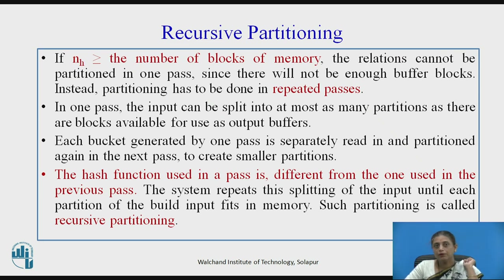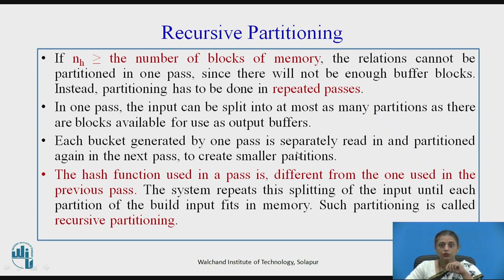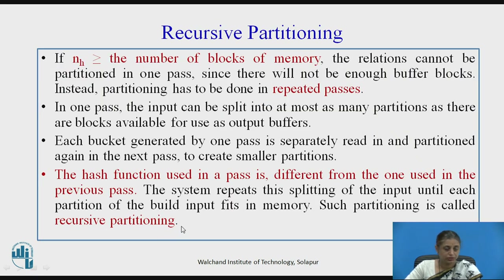When partitioning, it may happen that the number of partitions is greater than the number of memory blocks available. In that case we must repeat the partitioning process. In one pass we cannot split a relation into more partitions than available memory blocks allow. Each bucket generated by one pass is taken and further partitioned until it fits into main memory. The hash function used in one pass will be different from the next pass. This is called recursive partitioning.